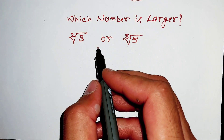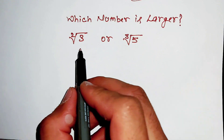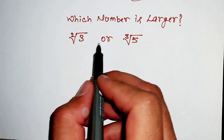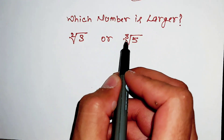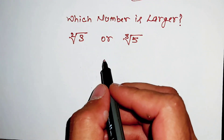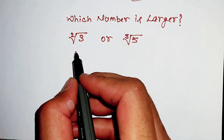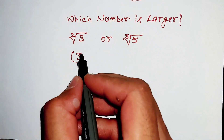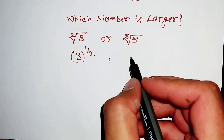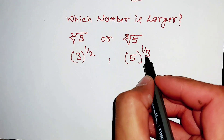Hello friends, the question is: which number is larger — square root of 3, or the cube root of 5? Let's find out. First of all, we will rewrite these numbers as 3 power 1 over 2 and 5 power 1 over 3.